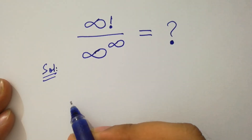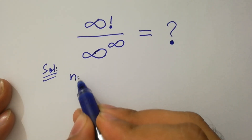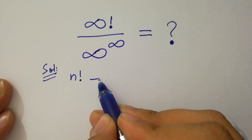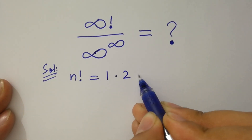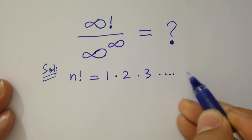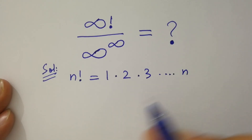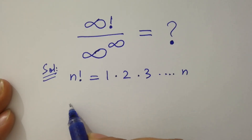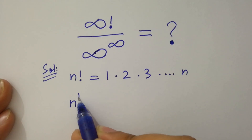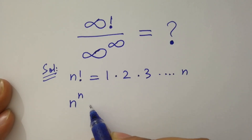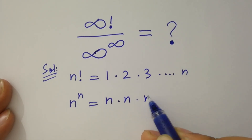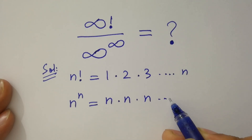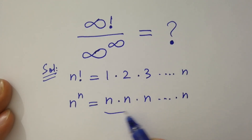As we know, n factorial equals 1 · 2 · 3 · ... · n. And n to the power n equals n · n · n · ... · n, n times.